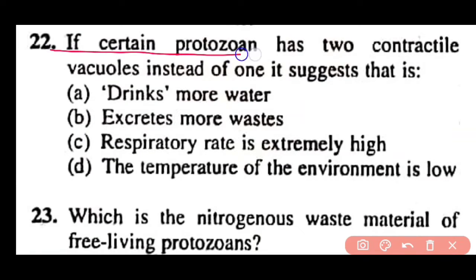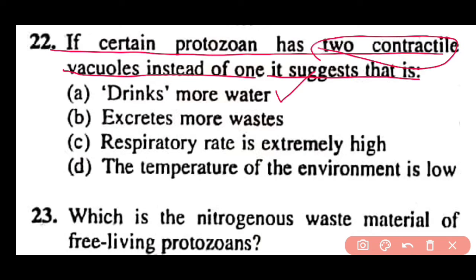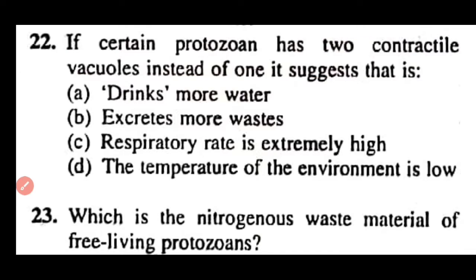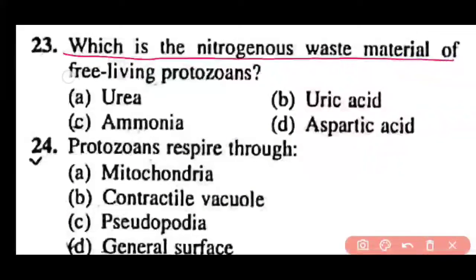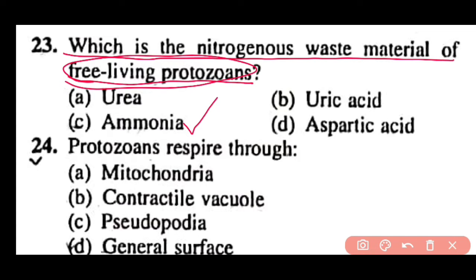Question 21: If a certain protozoan has two contractile vacuoles instead of one, it suggests that it drinks more water, excretes more water, respiratory rate is extremely high, or the temperature of the environment is low? Correct answer is option A — it drinks more water. Question 23: The nitrogenous waste material of free-living protozoans is urea, uric acid, ammonia, or aspartic acid? Correct answer is option C. Ammonia is the nitrogenous waste of free-living protozoans.